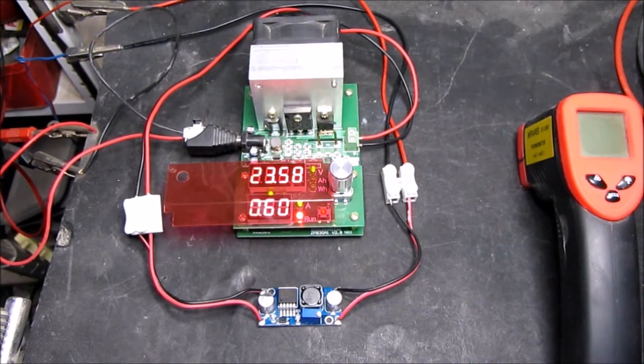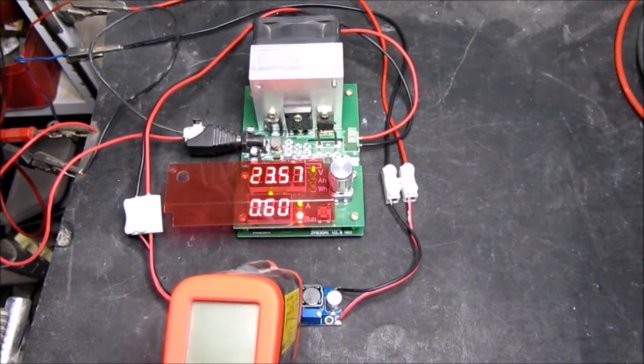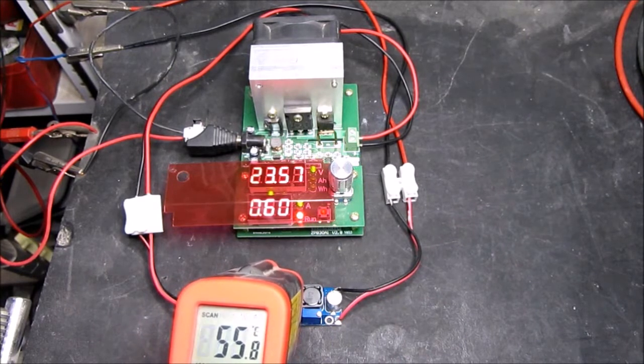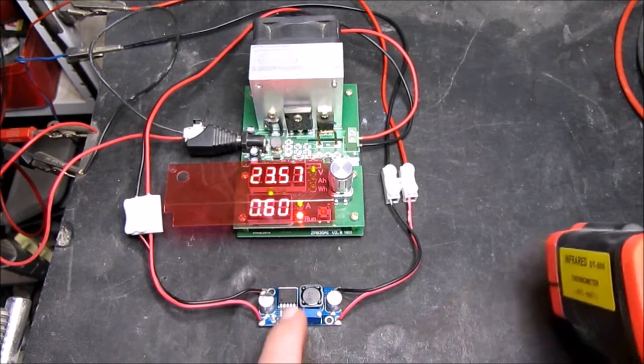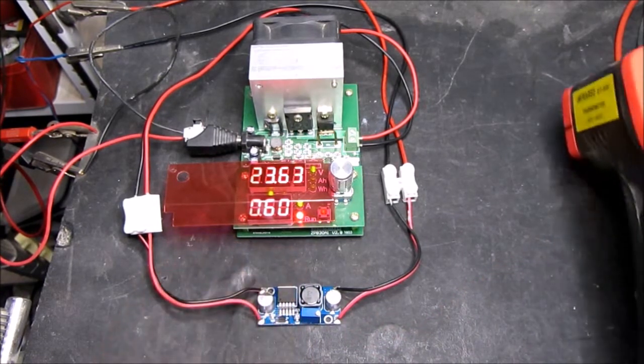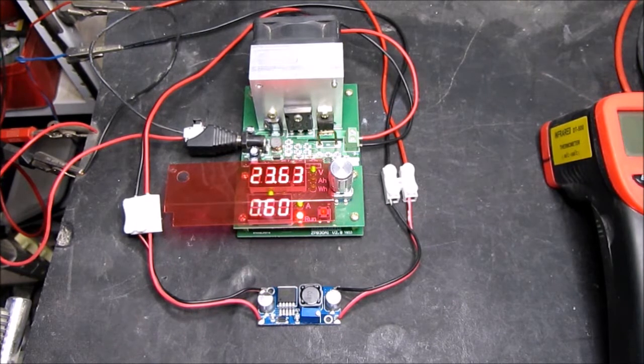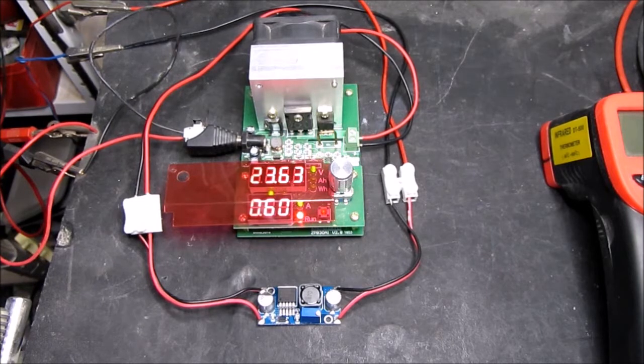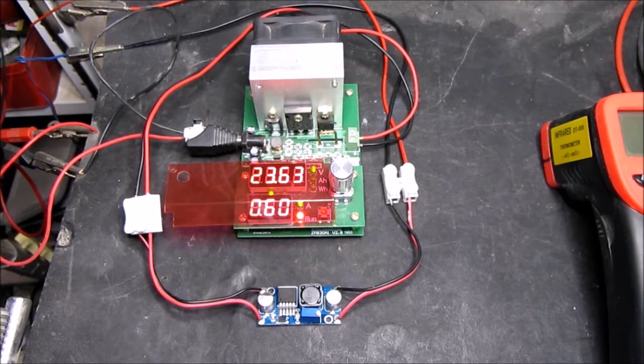We should be within the limits of not needing the heatsink. 56 degrees, so with a mark one finger that's warm but not by any means overheating. The next thing to do perhaps is to tweak up the current so we get over the 15 watts and see what sort of rise in temperature we get there.